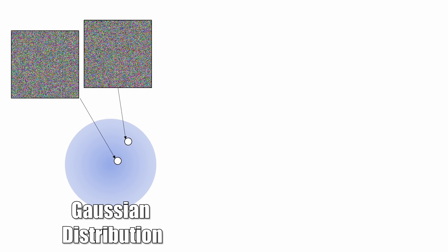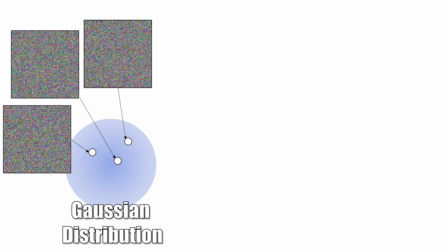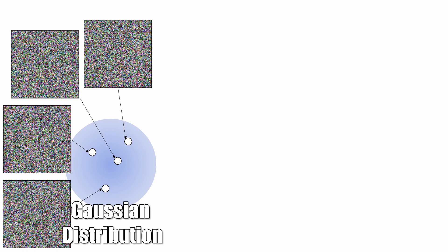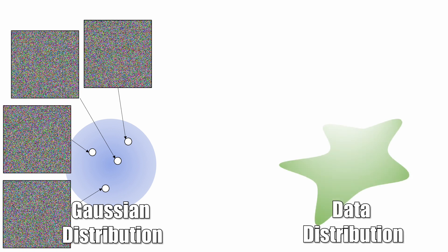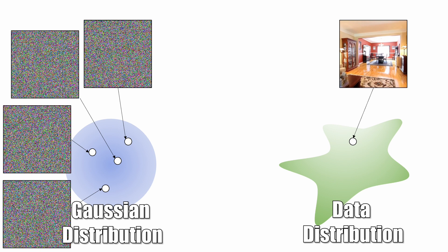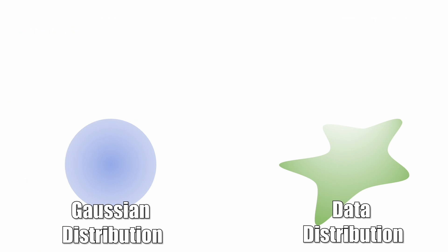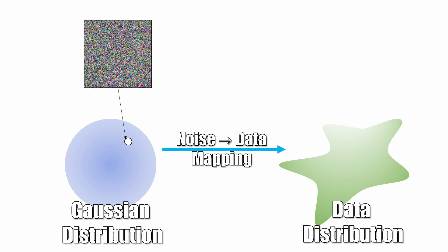How do we achieve this? Let's start with sampling an image. Roll the dice again, we get another one. By sampling images from a Gaussian distribution, we can easily generate many images. But this doesn't seem to be very useful. Sampling a realistic image from a data distribution is much more challenging. If we can find a noise-to-data mapping, we can take a random sample and transform it into a data sample.